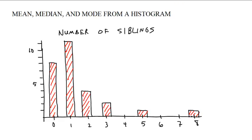For example, suppose we have this histogram. Number of siblings. We've done a study on how many people have no other siblings, one other sibling, two other siblings, and so on. This is the histogram. How do we know mean, median, and mode?